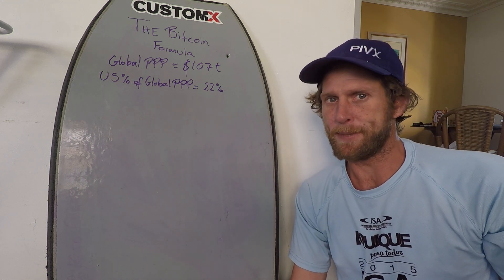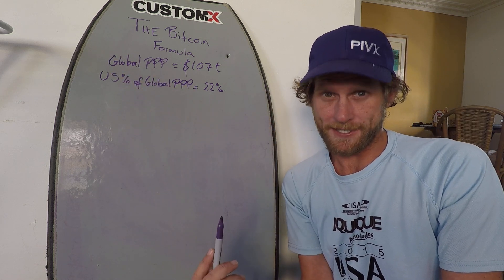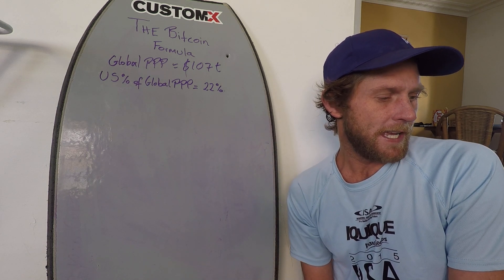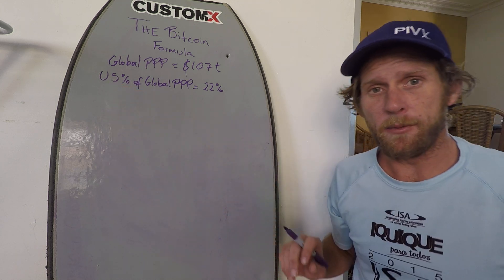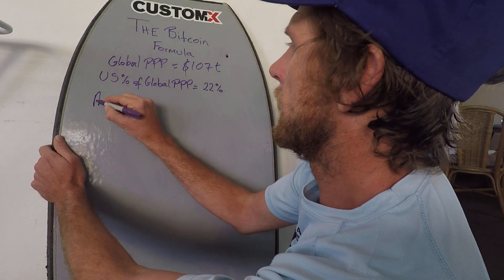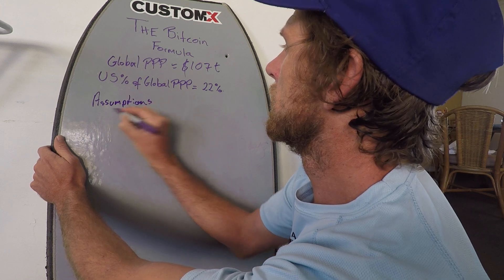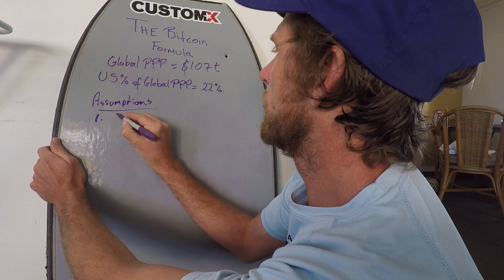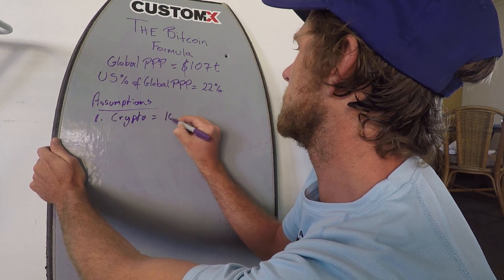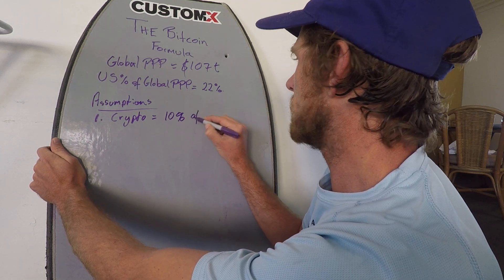That's where it stands at the moment in best estimates. So we're going to use those two facts as the basis of the formula, and now we're going to build in some assumptions to see where Bitcoin can get to in the future. The first assumption I've made is that one day the crypto economy will make up 10% of the total world economy — so Assumption 1: Crypto equals 10% of global PPP.